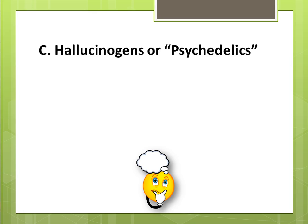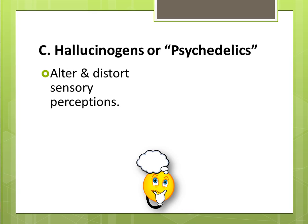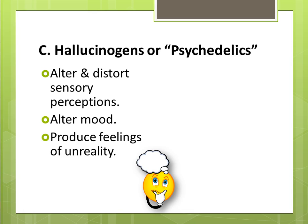Our final category is hallucinogens, or all-arounders. The root word of hallucinogen is hallucinate, which means to have an altered reality. In this case, hallucinogens alter and distort sensory perceptions. In other words, you perceive the world around you through a distorted lens — like things are fuzzy, moving slower, or moving faster. Hallucinogens alter mood and produce feelings of unreality. Marijuana is the most commonly abused hallucinogenic drug, and tends to produce a feeling of well-being, mild intoxication, and mild sensory distortions or hallucinations.